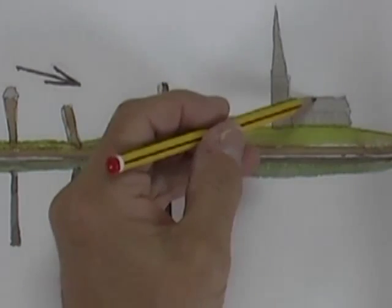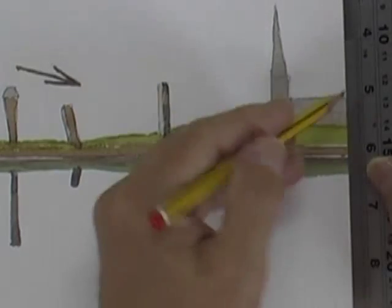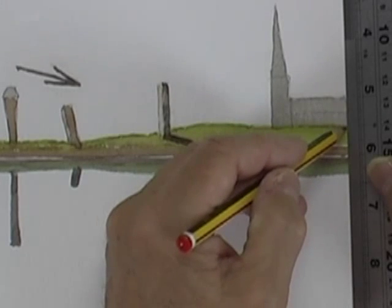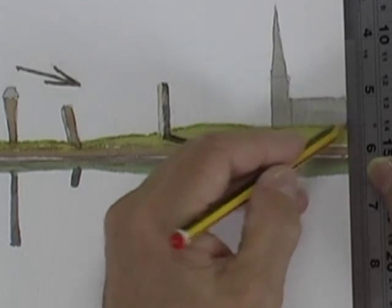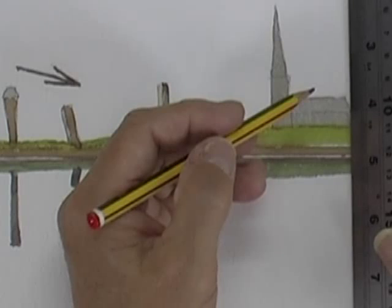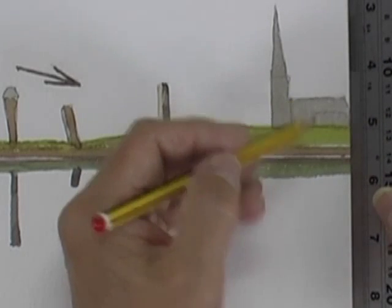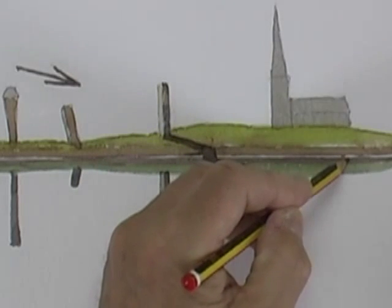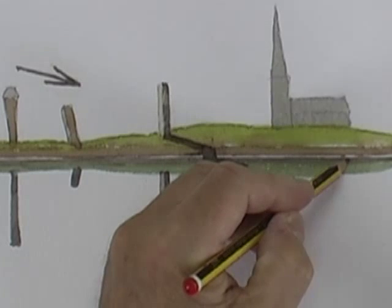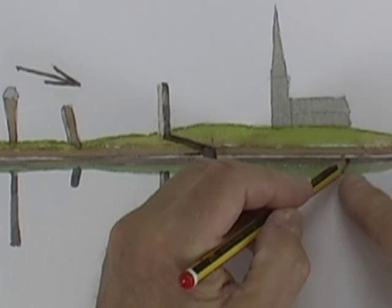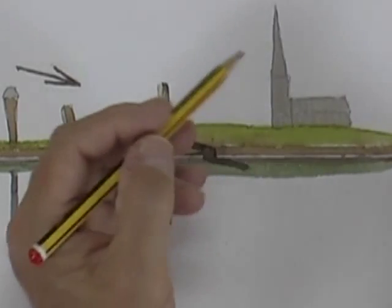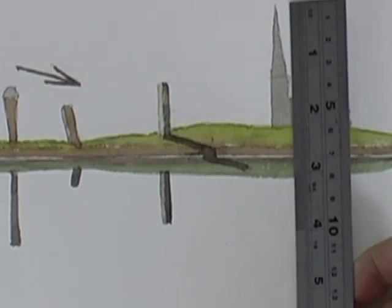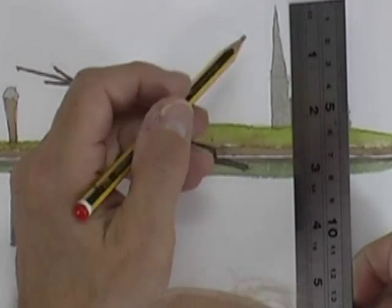Now if we measure the height of this building, for example, which from the top of the roof to the point where it hits the ground is just about half an inch, if we start the reflection at that point, you can see that the building isn't even going to be seen in the water at all. It's going to be hidden by your viewpoint of this reflected hillside.